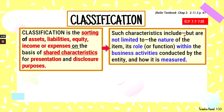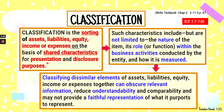Similar characteristics include, but are not limited to, the nature of the item, its role or function within the business activities conducted by the entity, and how it is measured. The conceptual framework also points out that classifying dissimilar elements of assets, liabilities, equity, income, and expenses together can obscure relevant information, reduce understandability and comparability, and may not provide faithful representation — both fundamental qualitative characteristics of financial statements.